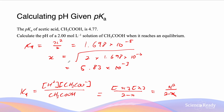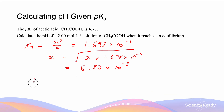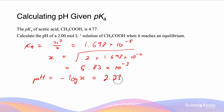Now that we have [H⁺] = x = 5.83 × 10⁻³, we can calculate pH using pH = −log(x), which gives a value of 2.235. This is given to three decimal places, remembering that significant figures convert to decimal places when calculating pH.